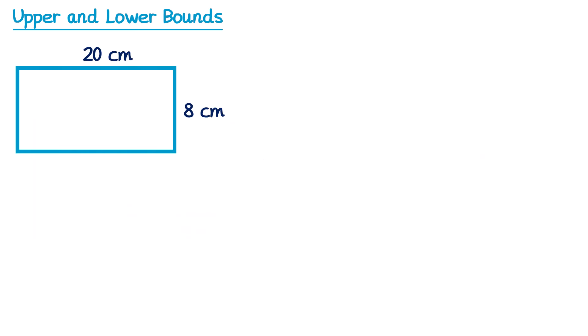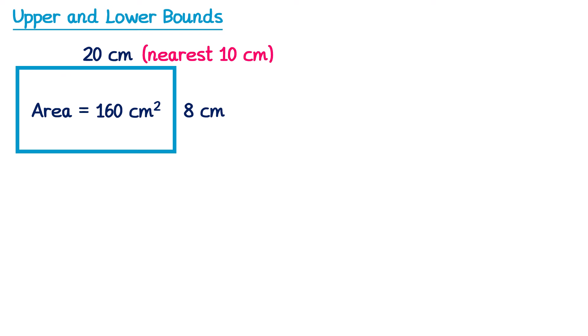Imagine we had a rectangle that was 20cm by 8cm. You could find its area by multiplying 20 by 8, which gives you 160cm squared. But what if 20cm wasn't actually necessarily exactly 20? It had been rounded to the nearest 10. And for the 8cm, it wasn't necessarily exactly 8 — it had been rounded to the nearest centimetre. What would be the maximum and minimum possible area for this rectangle?